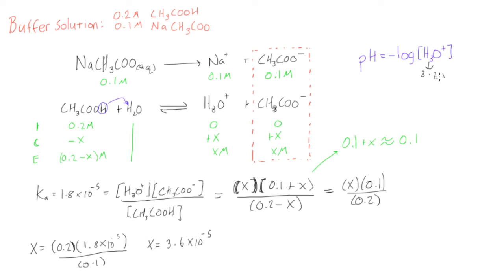And if you do that, negative log of this, we're going to get that our pH is equal to 4.4 for our buffer solution.